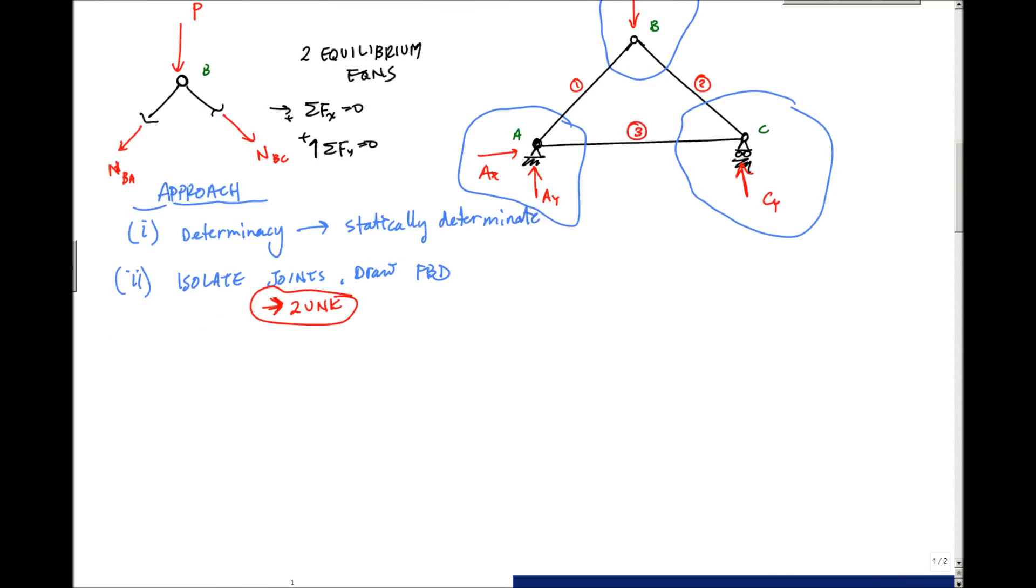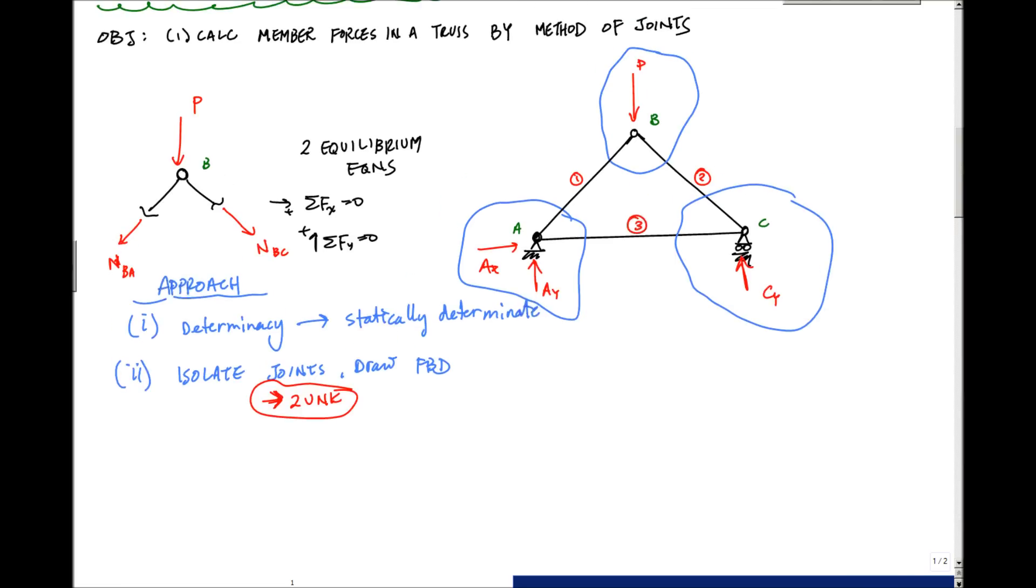Alternatively, what you could have done is to solve for the reactions globally, AX, AY, and CY, and then go method of joints. But here, in this case, it doesn't matter either way. So you want to isolate the joints, and the last thing you would do is apply your equilibrium equations. Let's move on now and do an example problem.